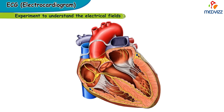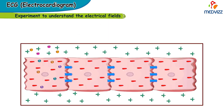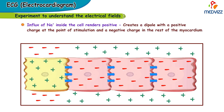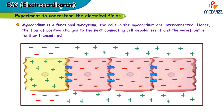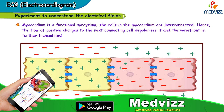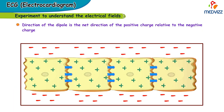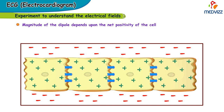Let's discuss an experiment to understand electrical fields. Consider a piece of isolated myocardium stimulated by an external source. Initially, the inside of the cells is negative owing to proteins and sulfates which carry negative charges. When stimulated, the influx of sodium renders the inside positive, creating a dipole with a positive charge at the point of stimulation and a negative charge in the rest of the myocardium. Because the myocardium is a functional syncytium, cells are interconnected, so positive charges flow to the next connecting cell, depolarizing it and transmitting the wave front further. The direction of the dipole is the net direction of the positive charge relative to the negative charge, which is also the direction of the wave of depolarization. The magnitude of the dipole depends on the net positivity of the cell — the greater the influx of sodium, the greater the magnitude.